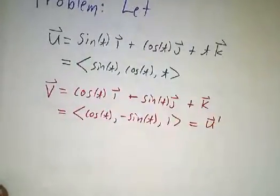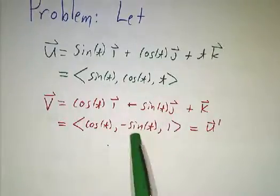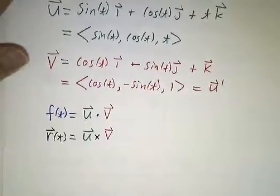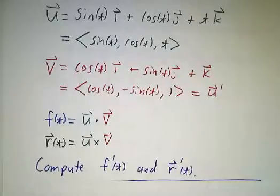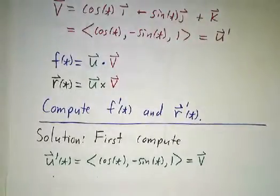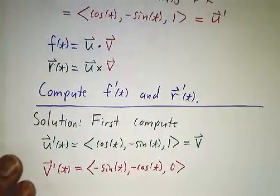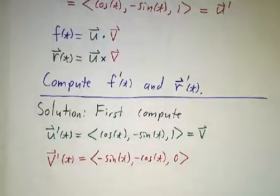Let's work a problem. Suppose we're given these two vector-valued functions: u = (sin t, cos t, t) and v = (cos t, −sin t, 1). Notice that v is the derivative of u. We want to consider their dot product and cross product, and take the derivatives of each. First, we find the derivatives: u-prime equals v, and v-prime has components (−sin t, −cos t, 0), since the derivative of cosine is negative sine, derivative of negative sine is cosine, and derivative of 1 is zero.